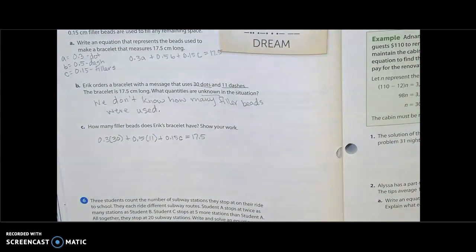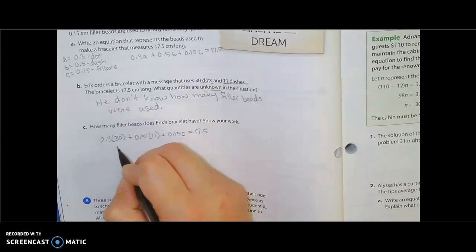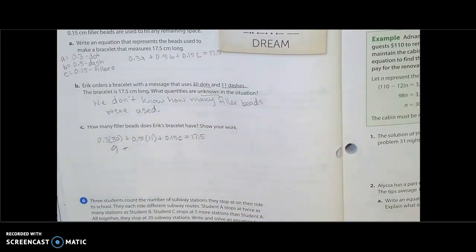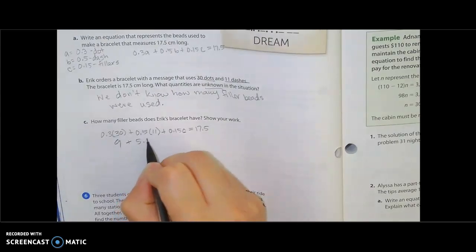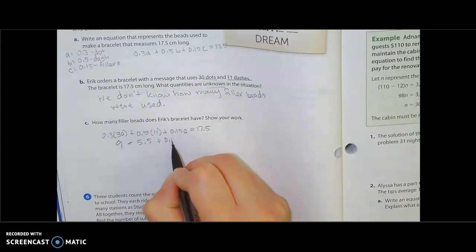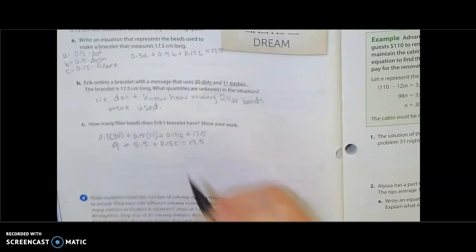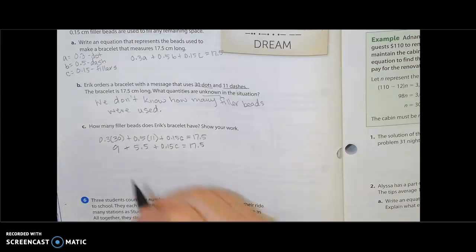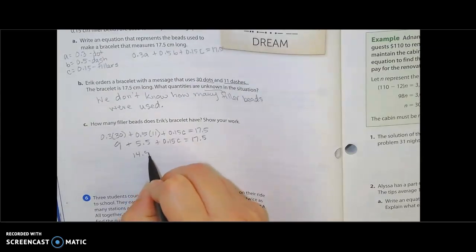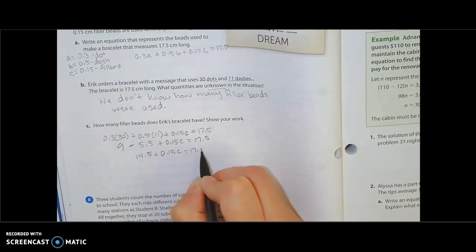So then we do the math. What is 0.3 times 30? That's 9. What is 0.5 times 11? That is 5.5. And then this stays 0.15C equals 17.5. From here we're going to combine 5.5 and 9, so that's going to give me 14.5 plus 0.15C equals 17.5.